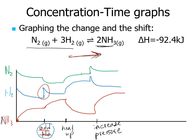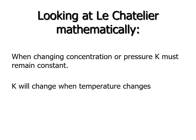You can vary this in many ways — add or remove reactants or products, cool the system, or increase pressure. Adding a catalyst would just continue equilibrium along without changing the position of equilibrium. Remember: as long as you're not changing the temperature, your K value remains the same. Now let's look at this mathematically — when changing concentration or pressure, K must remain constant. K only changes when temperature changes.